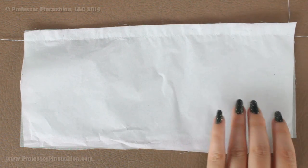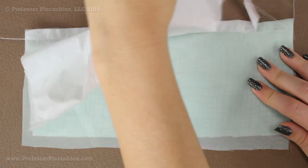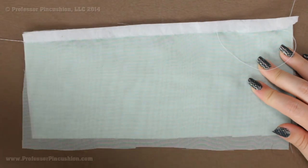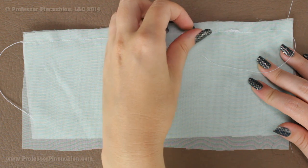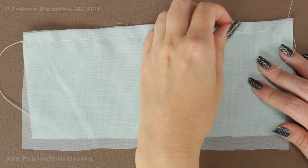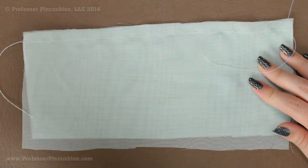When you finish a seam, all you have to do is just tear off the tissue paper. So it's really easy to use and then it's really easy to take off. Sometimes you have a few little scraps like this but it's really easy to pull out.